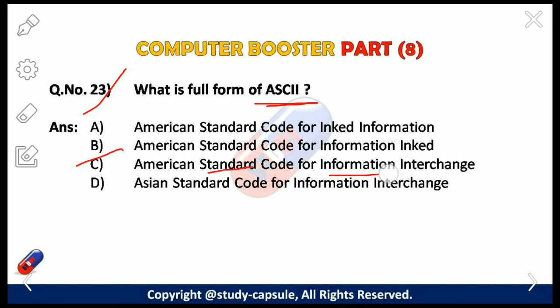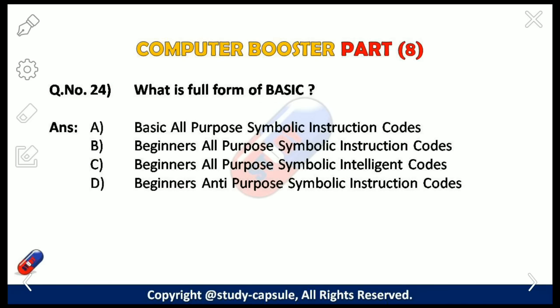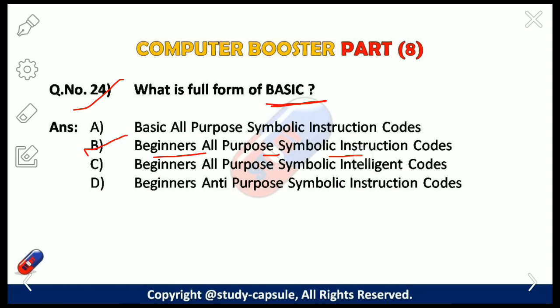Our 23rd question: what is the full form of ASCII? The answer is C — American Standard Code for Information Interchange. Our next question: what is the full form of BASIC? The answer is B — Beginners All Purpose Symbolic Instruction Code.